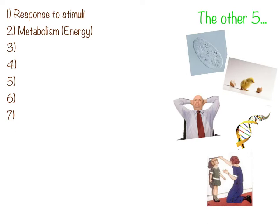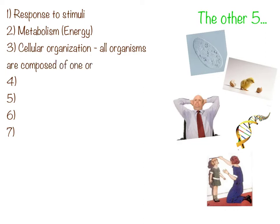So there are the first two properties of life: responsiveness, or response to stimuli, and metabolism — the one dealing with energy. Now there are five others. The third one is all about cellular organization. All organisms are composed of one or more cells. Some are extremely highly organized; some are very simplistic, like this paramecium up at the top.